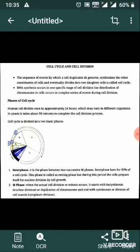The cell division cycle is divided into two basic phases: Interphase and M Phase. Interphase occurs between two successive M phases and represents 95% of the cycle. This phase is called the Resting Phase.